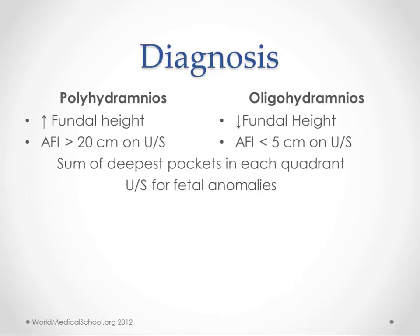Diagnosis is made with the amniotic fluid index. On ultrasound, they measure the deepest fluid pockets in four quadrants of the uterus. This is somewhat dependent on the baby's position, which makes it a bit inaccurate, but it's one of the best tools available. You add those four deepest measurements together — greater than 20 centimeters is polyhydramnios, less than five is oligohydramnios.